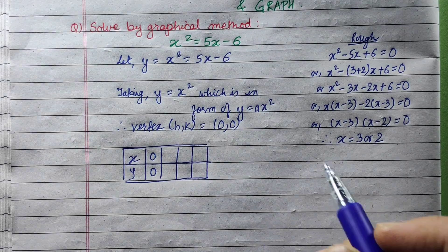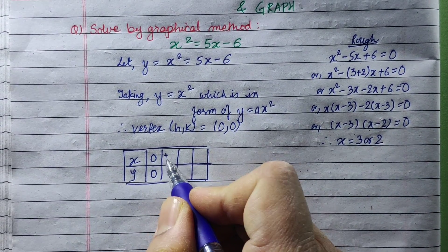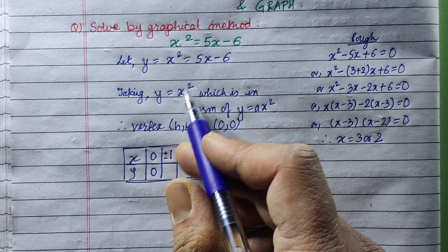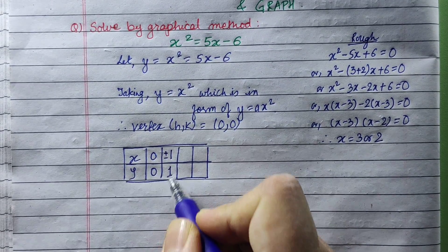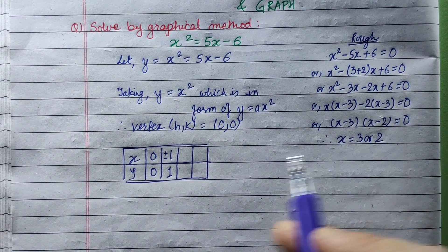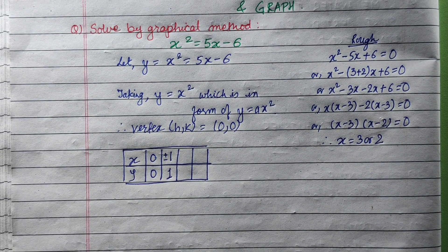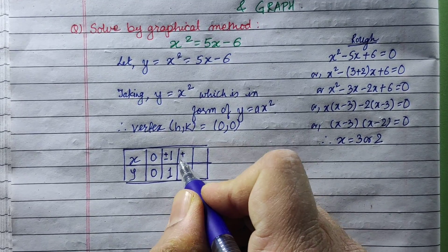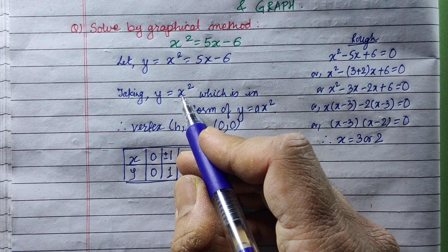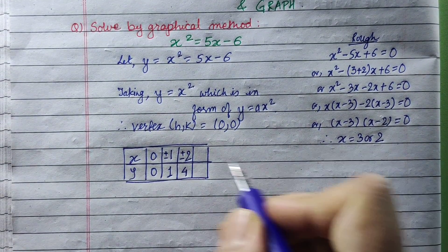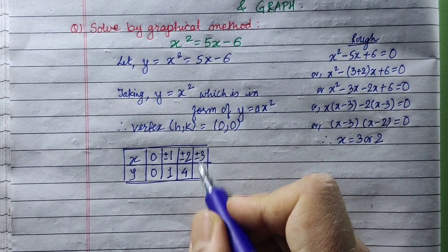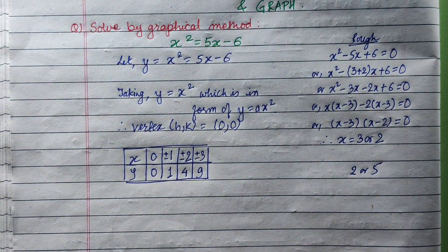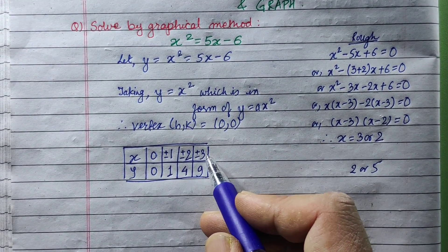I will show you how to do x squared. So we have: x equals plus or minus 2, and 2 squared is 4. Then x equals plus or minus 3, and 3 squared is 9. And suppose x equals plus or minus 5, then 5 squared is 25.